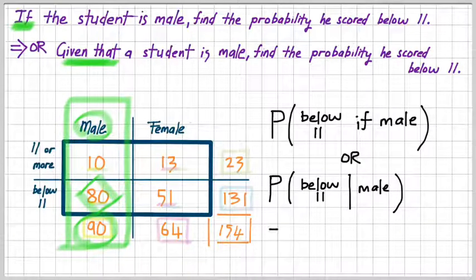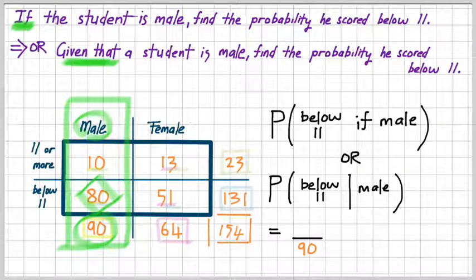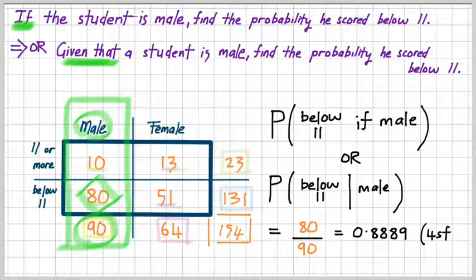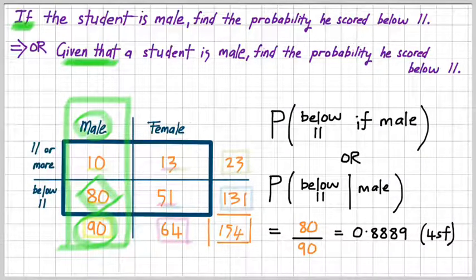Let's go through the calculation. The total was 90 — that's the total number of people in the group — and we're looking at 80 as the number of males who scored below 11. So your probability is going to be 80 divided by 90, which gives us 0.8889 to four significant figures. That's it for that part.